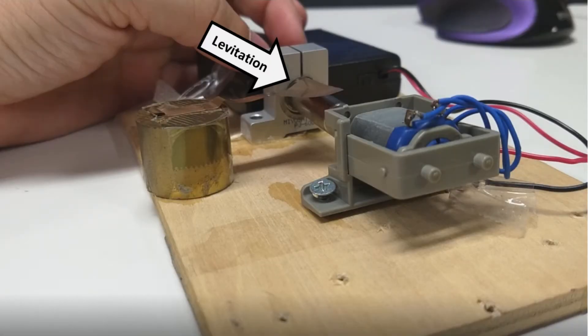In the recording we saw that when the permanent magnet is rotating, the copper sheet is levitated. But how does it work?